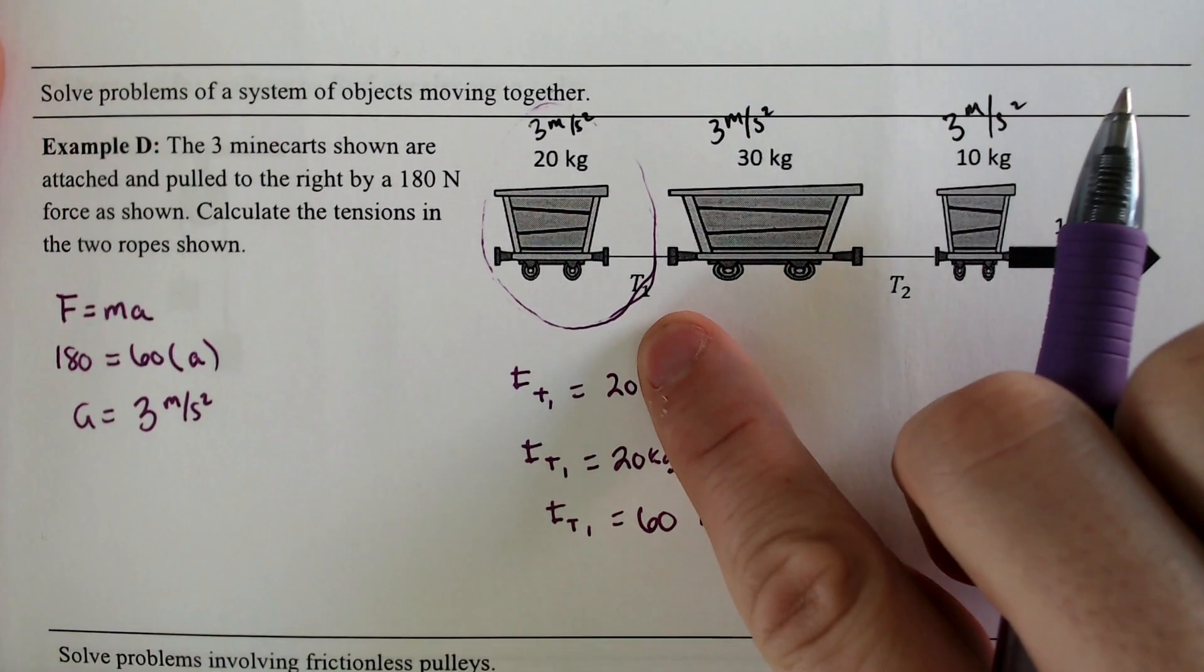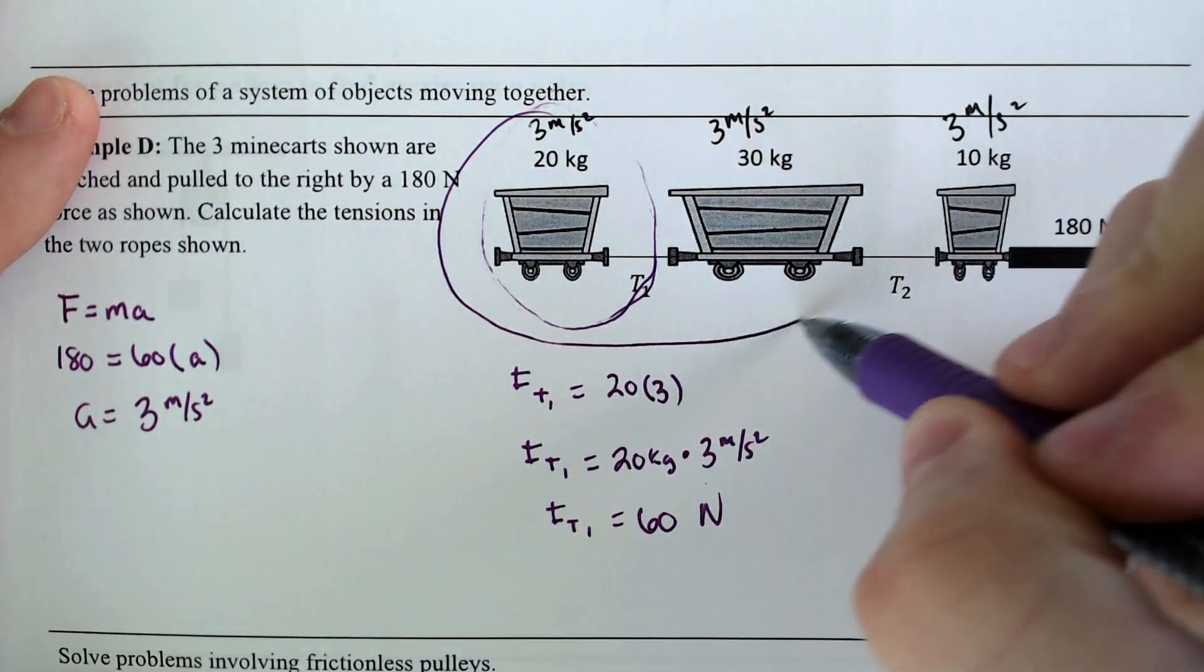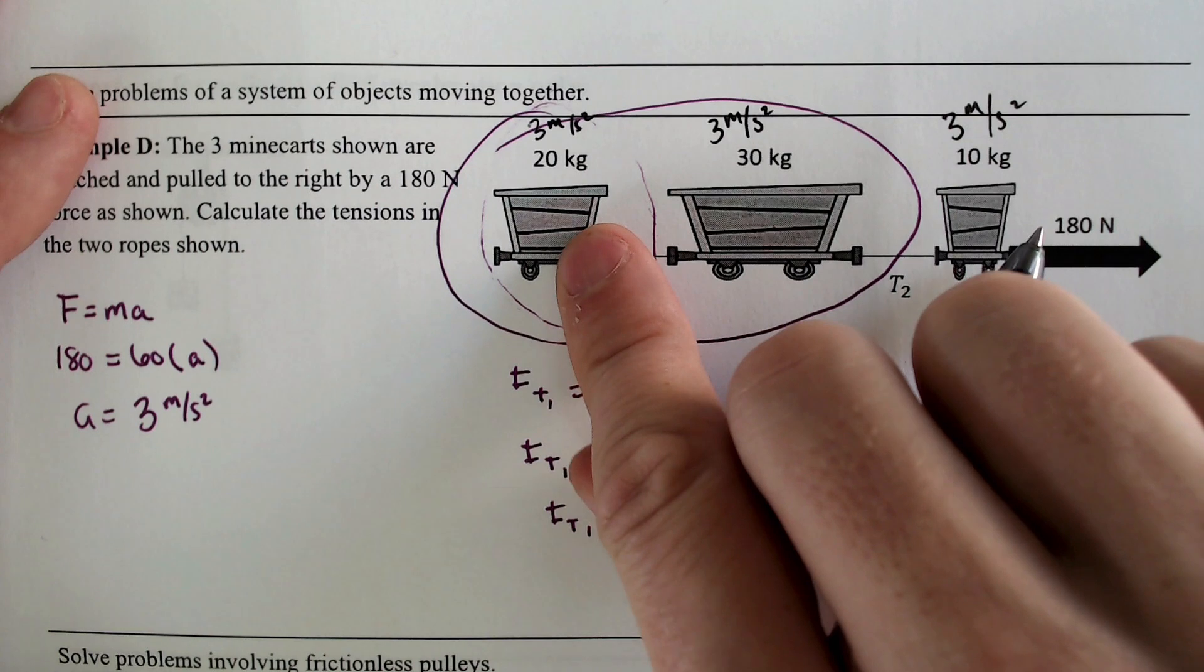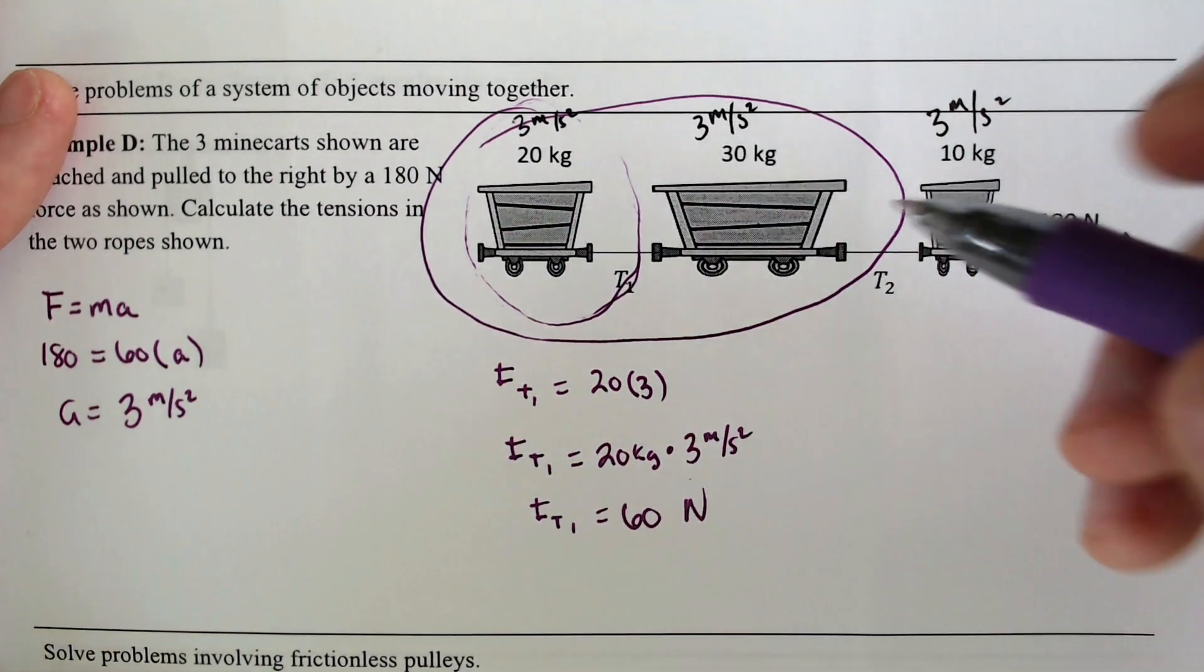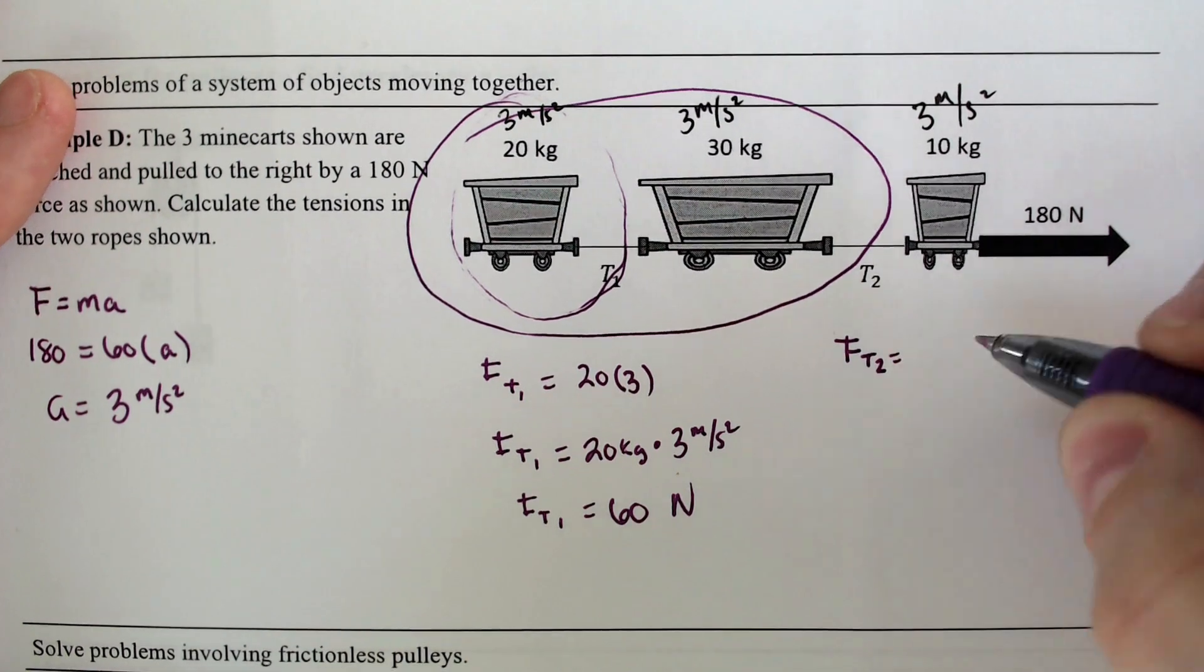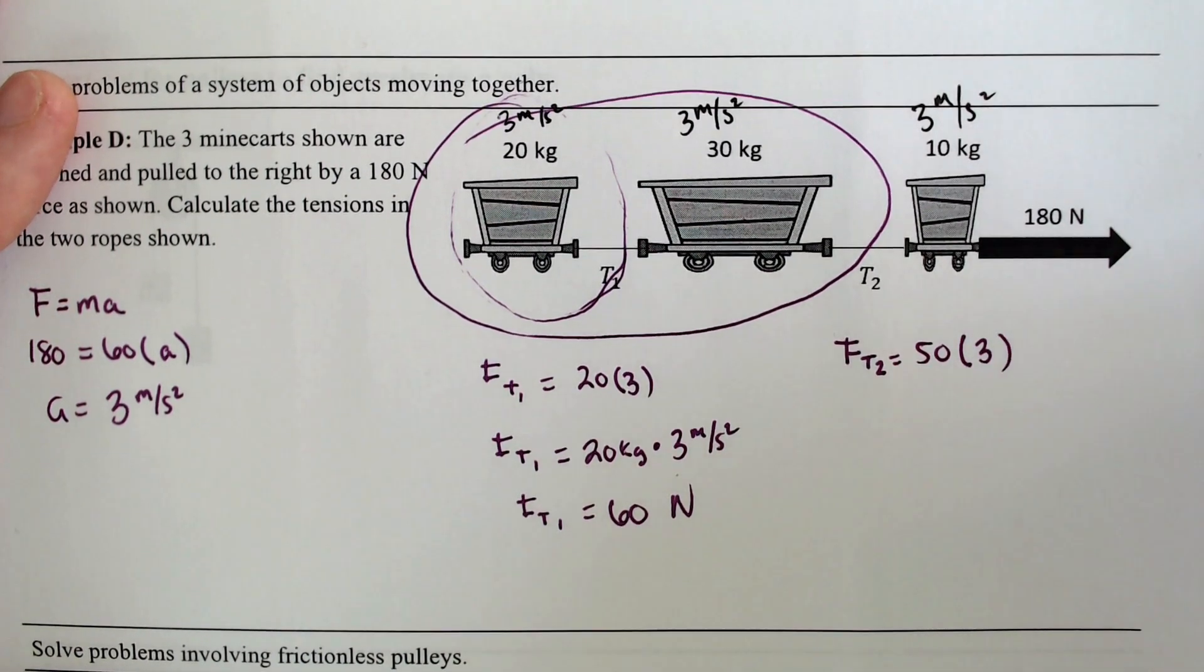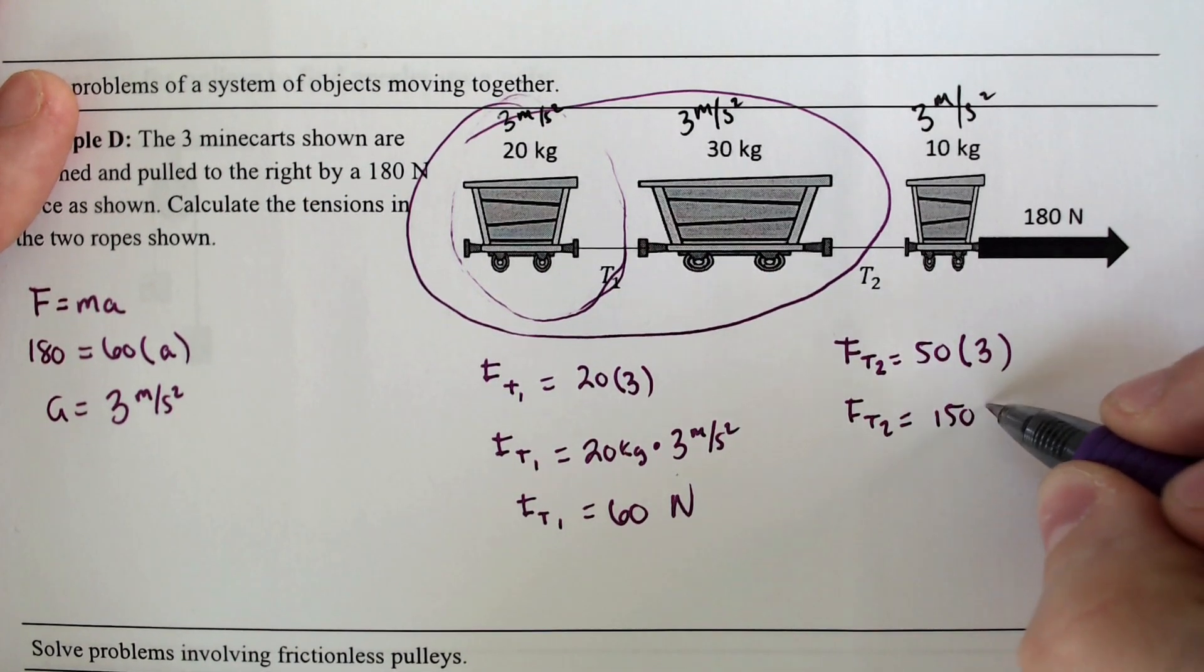Now that we got tension 1, tension 2, we're going to do the same thing, but instead we would need to think of tension 2 as both of these are being pulled by this rope in tension 2, which means we need to do kind of what we did with the 180. We need to combine the 20 and the 30 to get the true mass that tension 2 is having to pull, which is much more. And that would mean that the force of tension 2 will equal the mass, which would be 20 and 30 put together, 50, times its acceleration, which it's still going 3. So the force of tension 2 will be equal to 150 newtons.